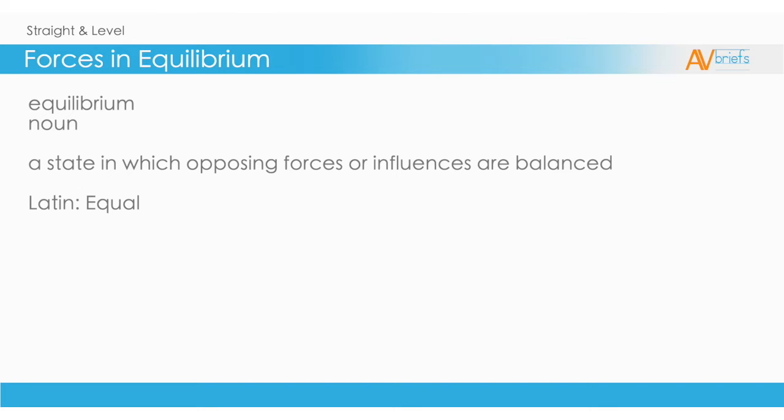As always, let's correctly define what we're talking about. We said that to achieve straight and level flight we must have the airplane in a state of equilibrium. Let's make sure we are using the correct definition of equilibrium to avoid unnecessary confusion. Equilibrium means a state in which opposing forces or influences are balanced.